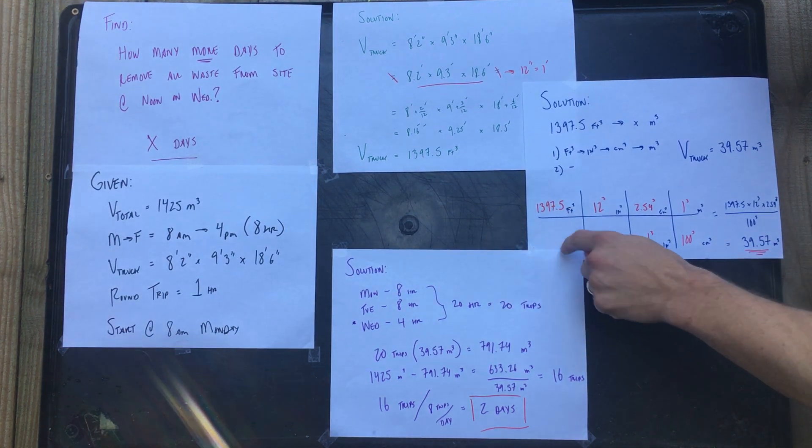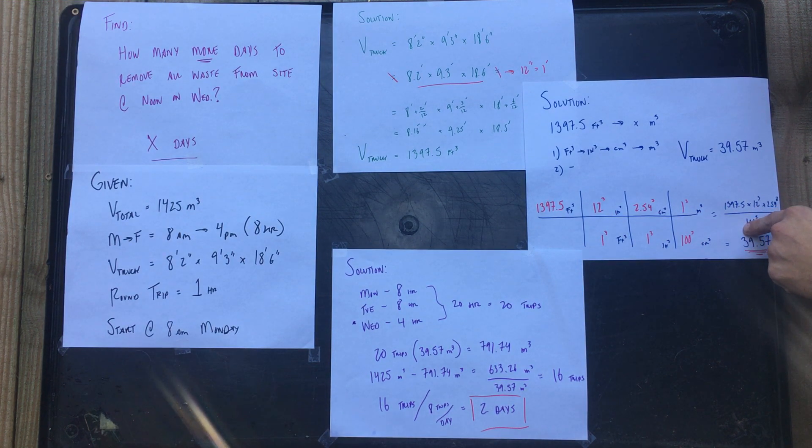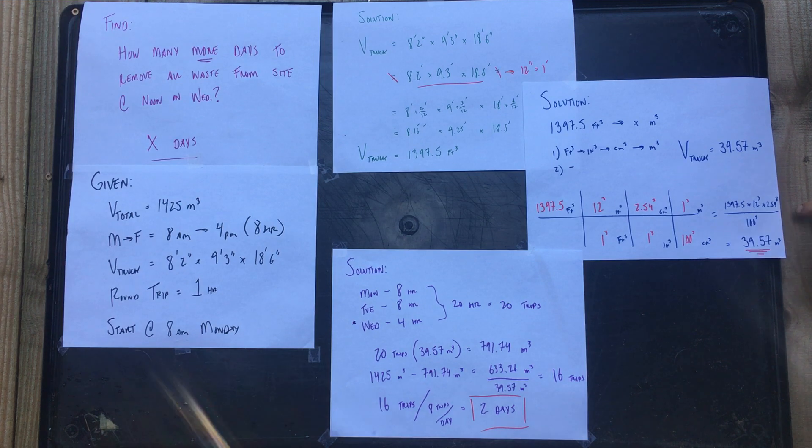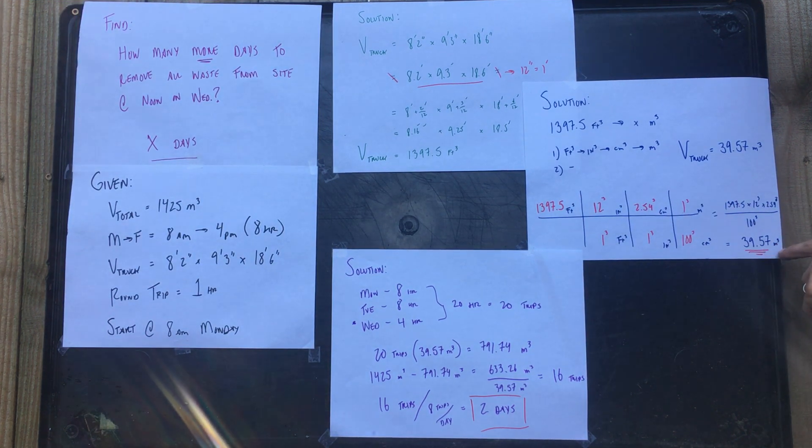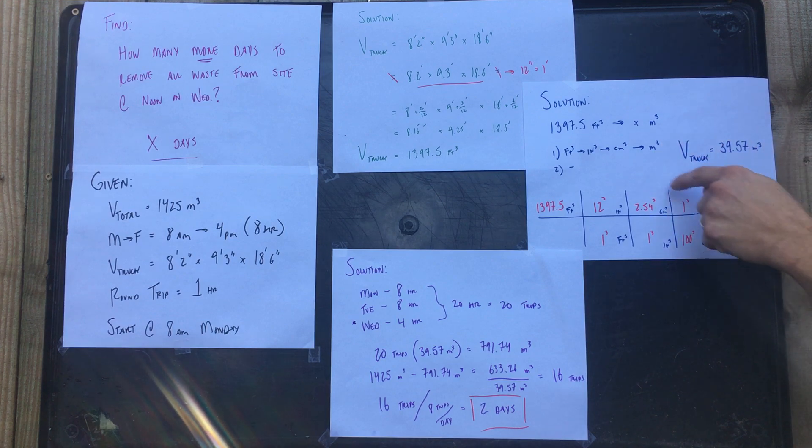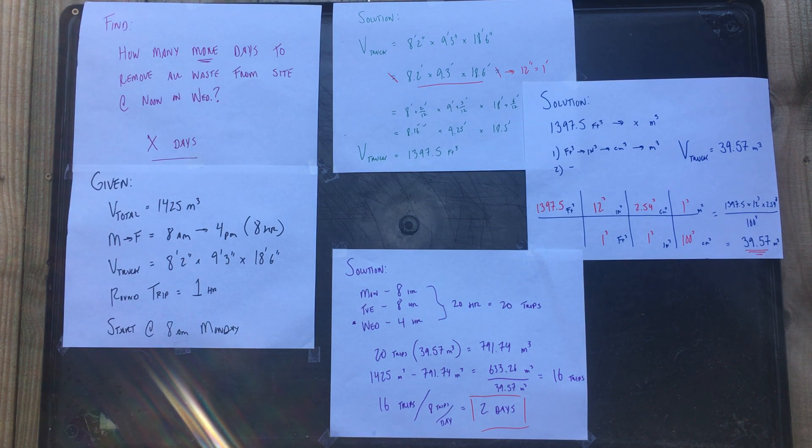From the left is what's given; to the right are unit conversions. Once you add all that in, you give this aside for my horrible handwriting. But essentially you're gonna plug this out and you're gonna get 39.57 cubic meters. So now that's the volume of the truck in terms of what our metric measurement is.